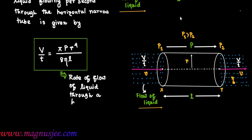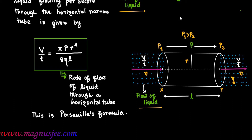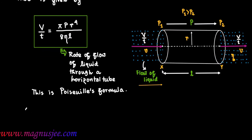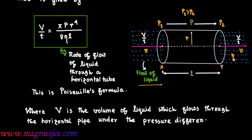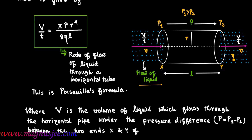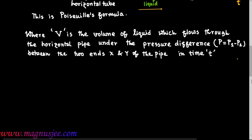This is Poiseuille's formula for the rate of flow of liquid through a horizontal tube, where V is the total volume of liquid which flows through the horizontal tube or pipe under the pressure difference P equal to P1 minus P2. P1 is the pressure at end x and P2 is the pressure at the other end y of the tube. V is the volume of liquid which flows through the pipe in time t.